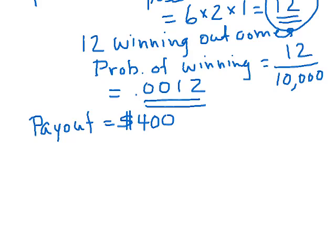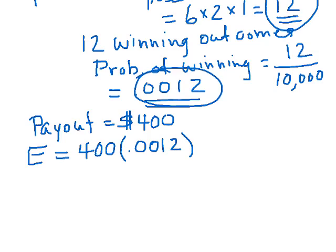So let's think what our expected return is. Two things can happen. We either win or lose. If we win, we win $400. In this calculation I'm going to ignore the ticket price. We'll factor that in later. I'm assuming we're betting a dollar. If we bet a dollar and win, the payout is $400. So the payout is $400 and that's what we get with probability 0.0012. We calculated that was the probability of winning.